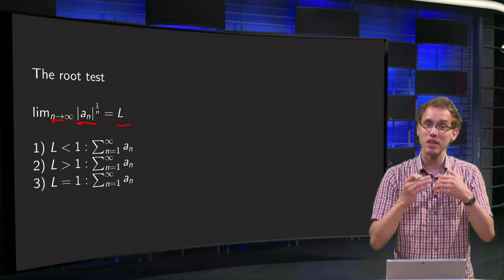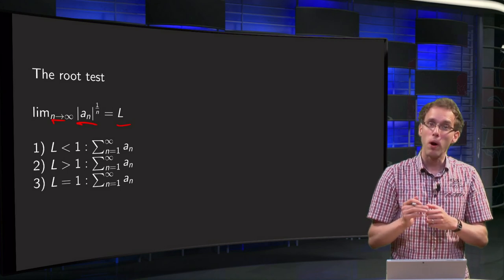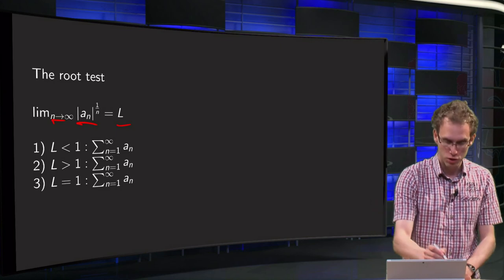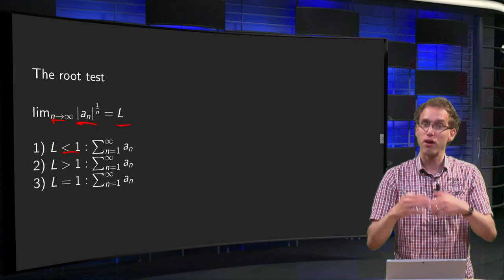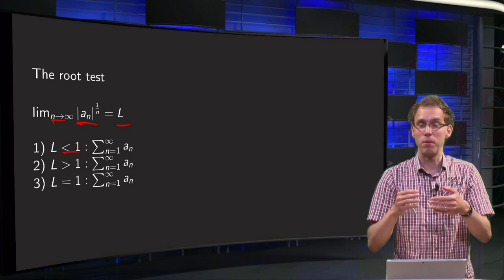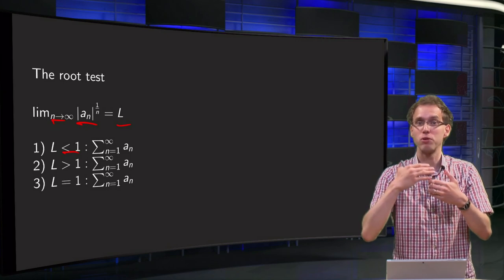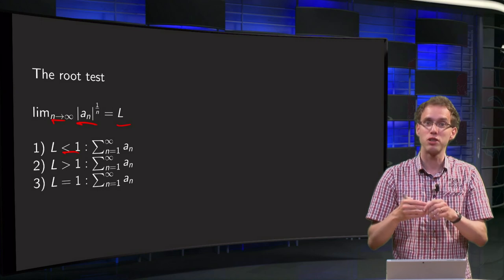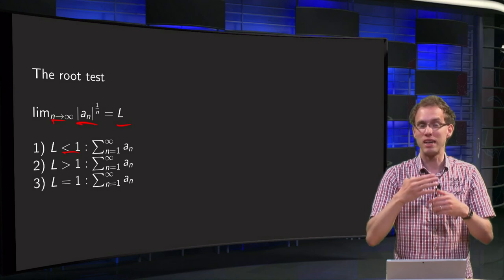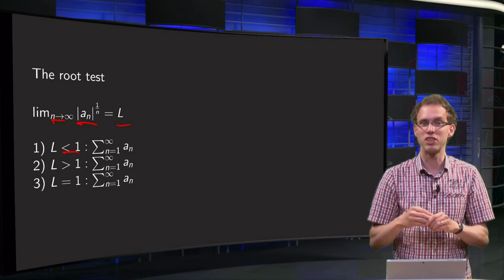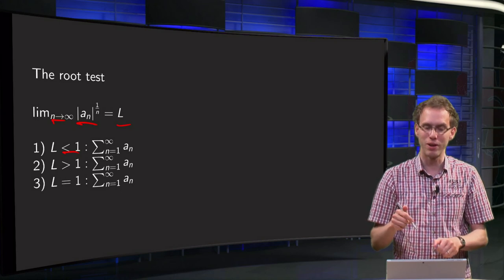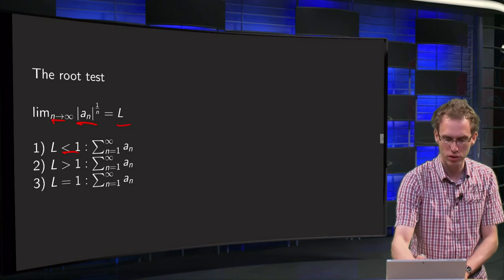But then, what happens if we can do that? Well, if your limit L is smaller than 1, then if you are far enough, your terms behave like some L to the power n, where your L is smaller than 1. So they decay faster than some geometric series with ratios that are smaller than 1. So your series is probably going to converge.